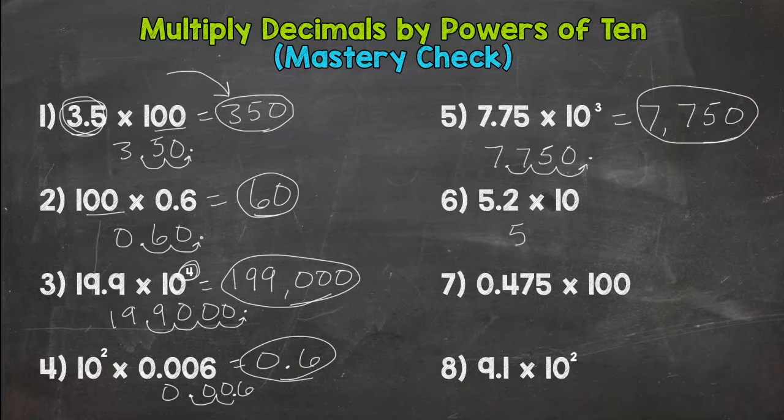Number 6, 5.2 times 10, 1, 0. Move the decimal once, and we get 52.